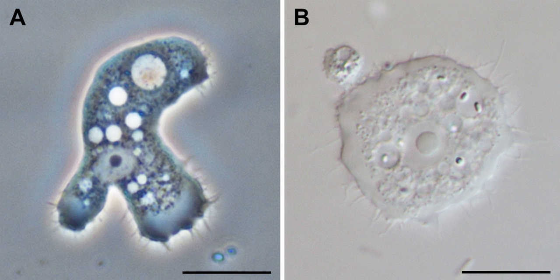Discosian amoebae lack hard shells, but some, like Cochleopodium and Korotnevella, secrete intricate organic scales which may cover the upper, dorsal surface of the cell. No species have flagella or flagellated stages of life.